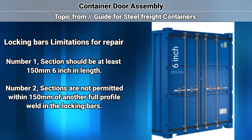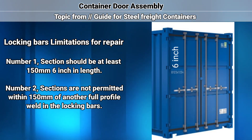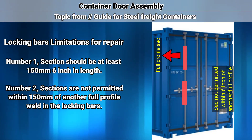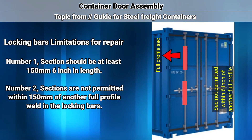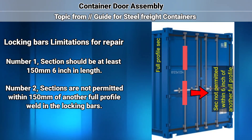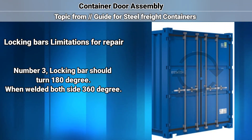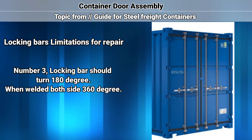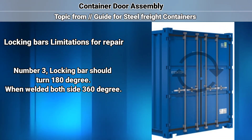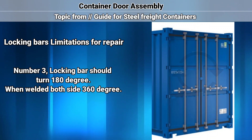Limitation of locking bars. Number 1: sections should be at least 150 mm (6 inch) in length. Number 2: sections are not permitted within 150 mm of another full profile weld in the locking bars. Number 3: locking bar should be welded on both sides, 360 degrees.